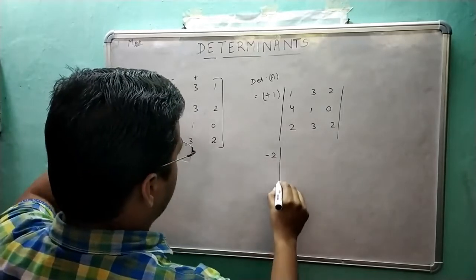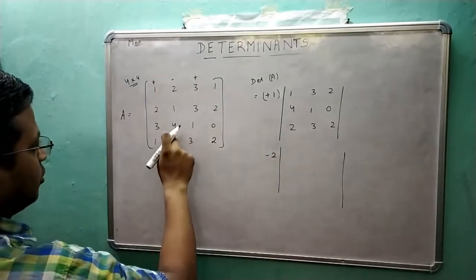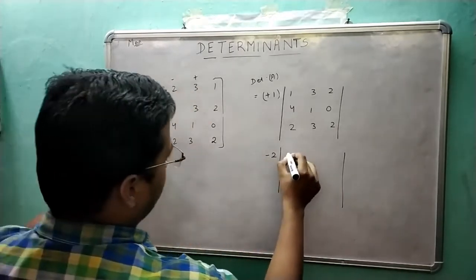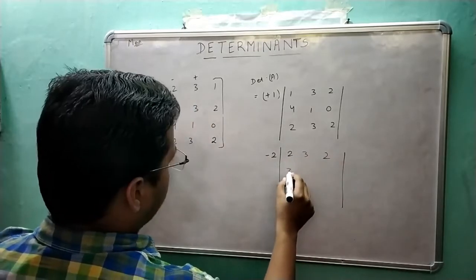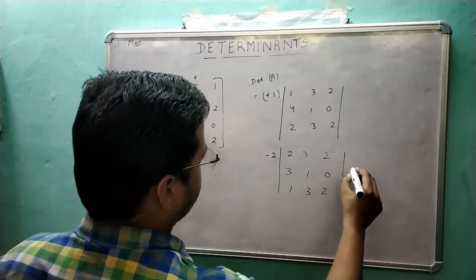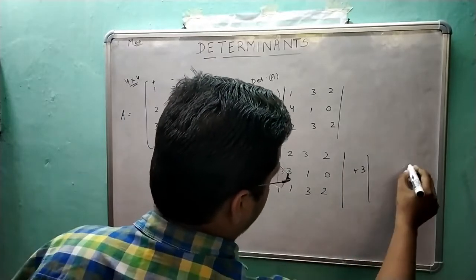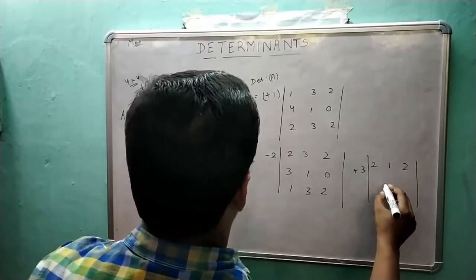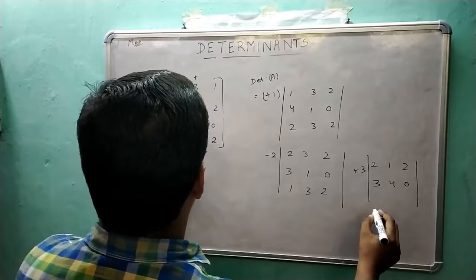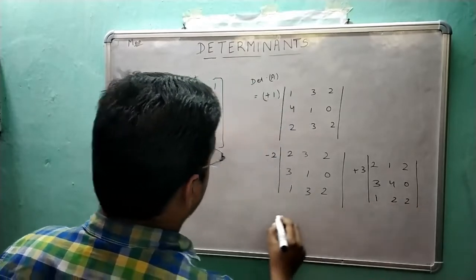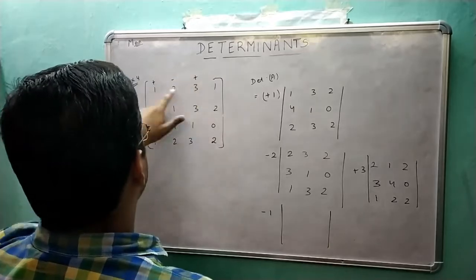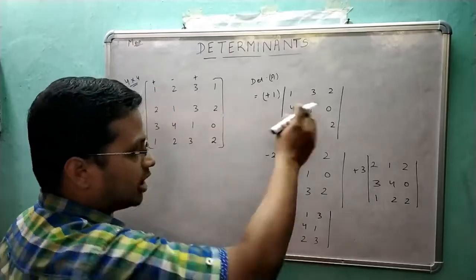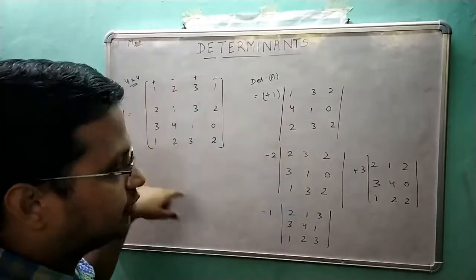Next, minus 2 into the determinant of the submatrix obtained by forgetting the row and column containing that element: 2 3 2 / 3 1 0 / 1 3 2. Then plus 3 into the determinant of 2 1 2 / 3 4 0 / 1 2 2. And finally minus 1 into the determinant of 2 1 2 / 2 3 1 / 2 3 1. By solving these you will get the value of the determinant of this matrix.